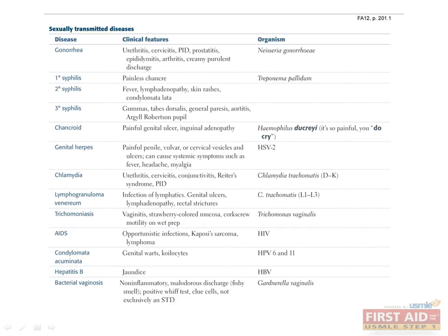We've already covered each of the sexually transmitted diseases earlier in these talks, but let's go through them now as a group. Gonorrhea is caused by Neisseria gonorrhoeae. Symptoms include urethritis, cervicitis, pelvic inflammatory disease, prostatitis, epididymitis, arthritis, and a creamy purulent discharge.